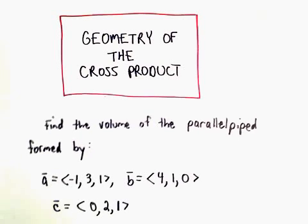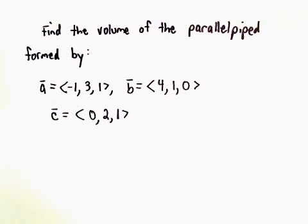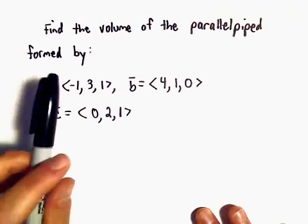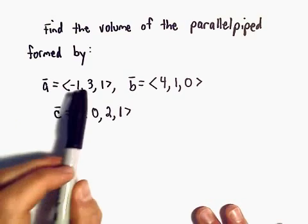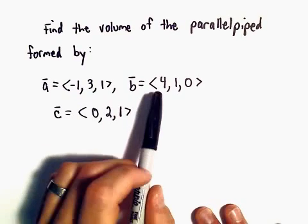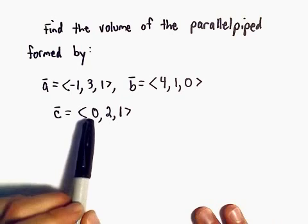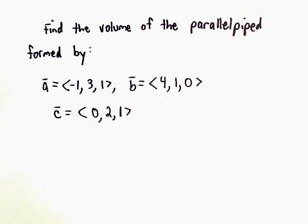All right, here we're going to look at an example of finding the volume of a parallelepiped that's formed by three vectors. We have the vectors ⟨-1, 3, 1⟩, the vector ⟨4, 1, 0⟩, and our other vector will be ⟨0, 2, 1⟩.